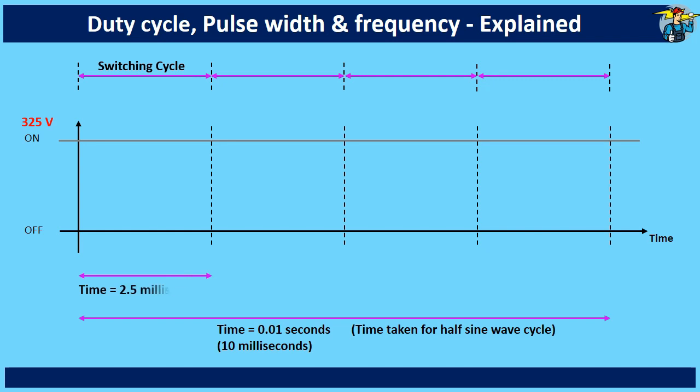Periodic time of the switching cycle is 2.5 milliseconds, since we have 4 switching cycles over the period of 10 milliseconds. Let's keep the switches on for the first half of the cycle and off for the next half of the cycle.